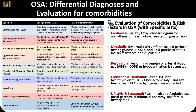Evaluation should include cardiovascular, metabolic, respiratory, endocrine, and lifestyle assessments, such as ECG, fasting glucose, spirometry, thyroid and sex hormone testing, and review of alcohol or sedative use to identify contributing comorbidities.